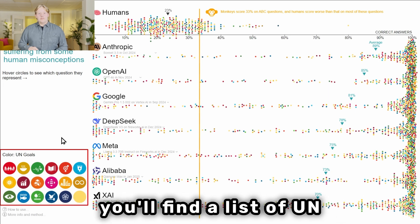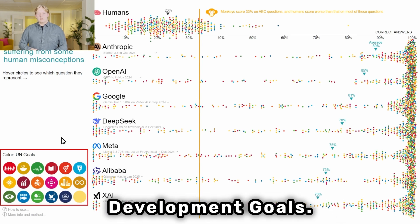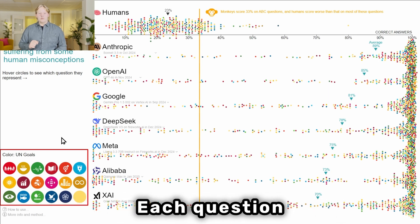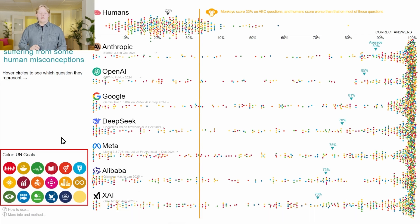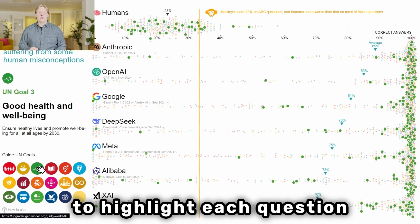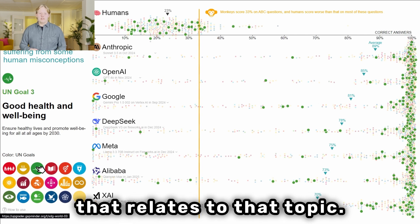At the bottom left corner you'll find a list of UN sustainable development goals. Each question is color-coded based on which UN goal it relates to. Try hovering over a goal to highlight each question that relates to that topic.